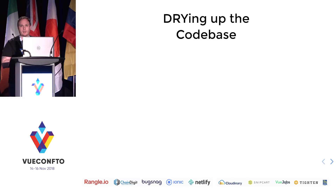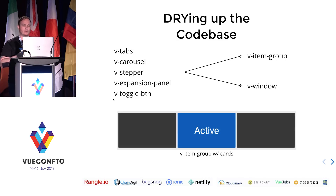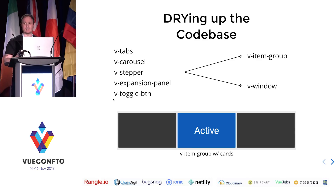Talking about drying up the codebase: one thing we've seen working in the framework for so long is that we have duplicated functionality that exists throughout multiple components — they're really just a different paint job. Let's take tabs, carousels, steppers, expansion panels, and toggle buttons. They look completely different in the application, but they share the same core functionality. So we're breaking out that core functionality, giving us an easy way to maintain these components, and also giving that to developers. If you don't like the way we do our carousels, just make your own.